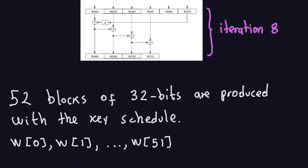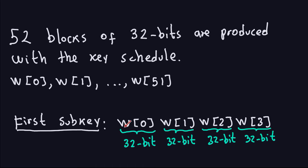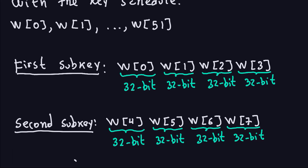Once I produce these 32-bit W-blocks, I can form my subkeys. The first subkey is the first four 32-bit blocks: W0, W1, W2, and W3. Because every W is 32-bit, four of them gives 4 × 32 = 128 bits — a 128-bit subkey. For the Advanced Encryption Standard, all subkeys are 128-bits. The second subkey starts at the next block: W4, W5, W6, and W7, again giving a 128-bit subkey.